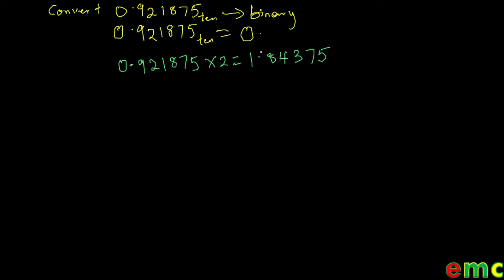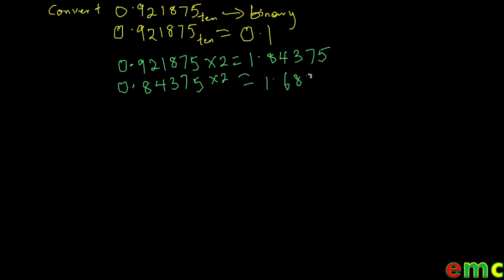You write out the whole number part you got from your answer. Here we have 1, so we bring out the 1 and then multiply the rest again by 2. So we multiply 0.84375 by 2 again, and we get 1.6875.